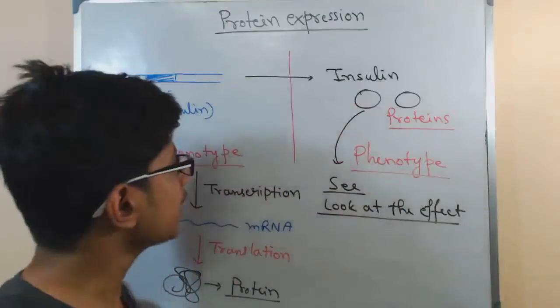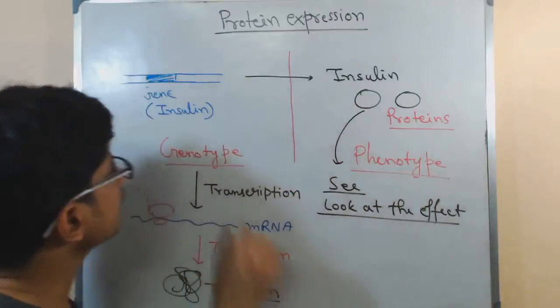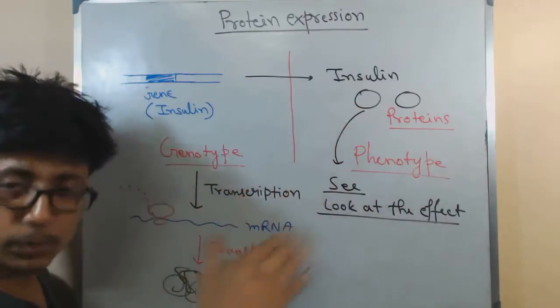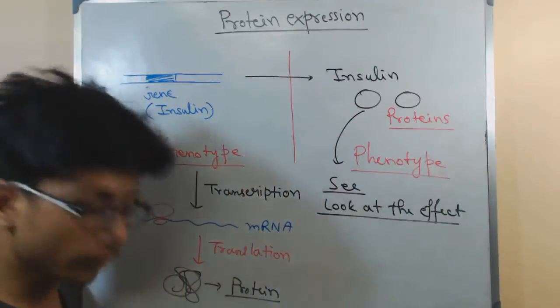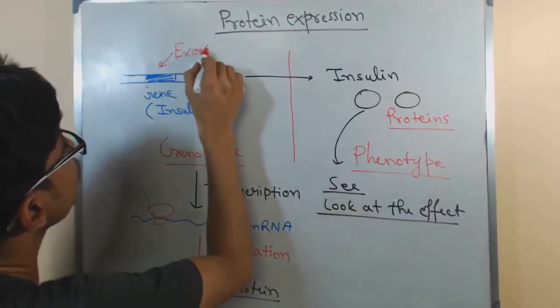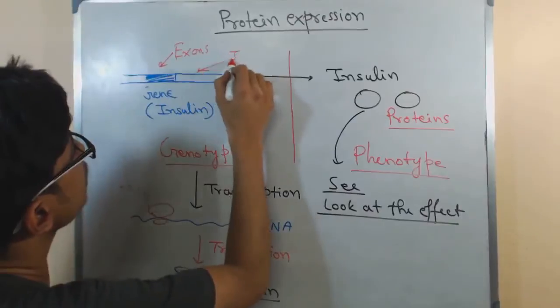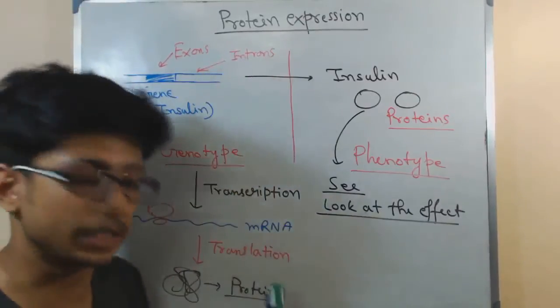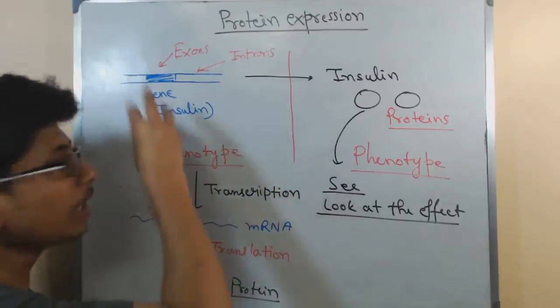Because in eukaryotes, inside the gene of eukaryotes if you look, there are some portions that can code for proteins but other portions will not code for any protein. So the portions that are coding for proteins are termed as the exons, and the portions that are non-coding are called introns. So this is the difference. In this case, only the exons are capable of producing proteins.